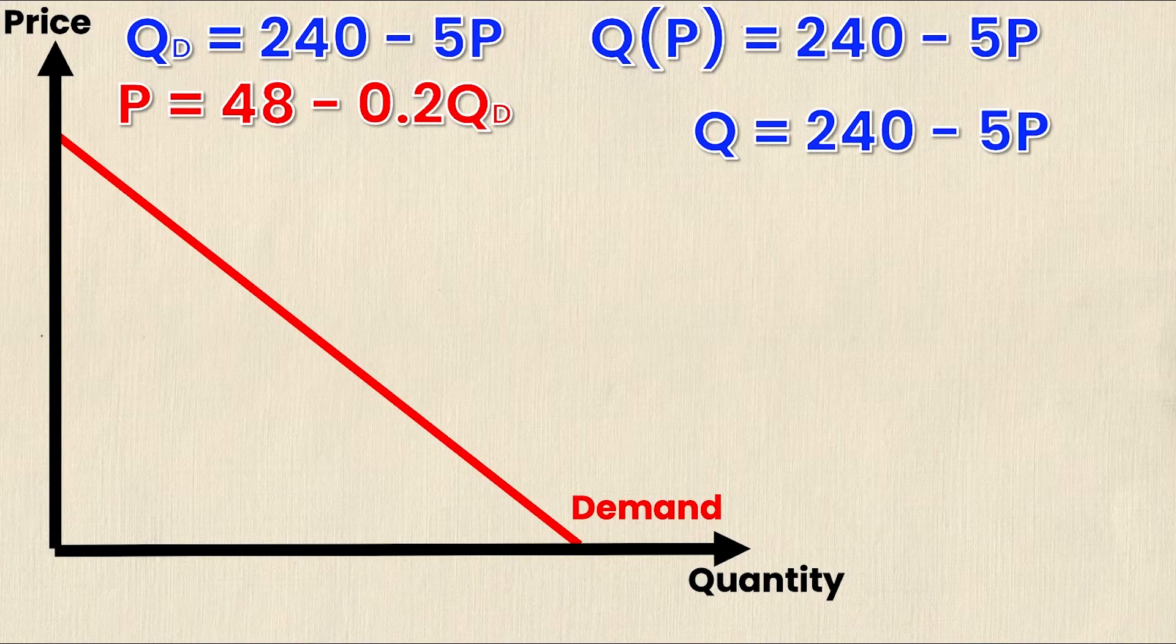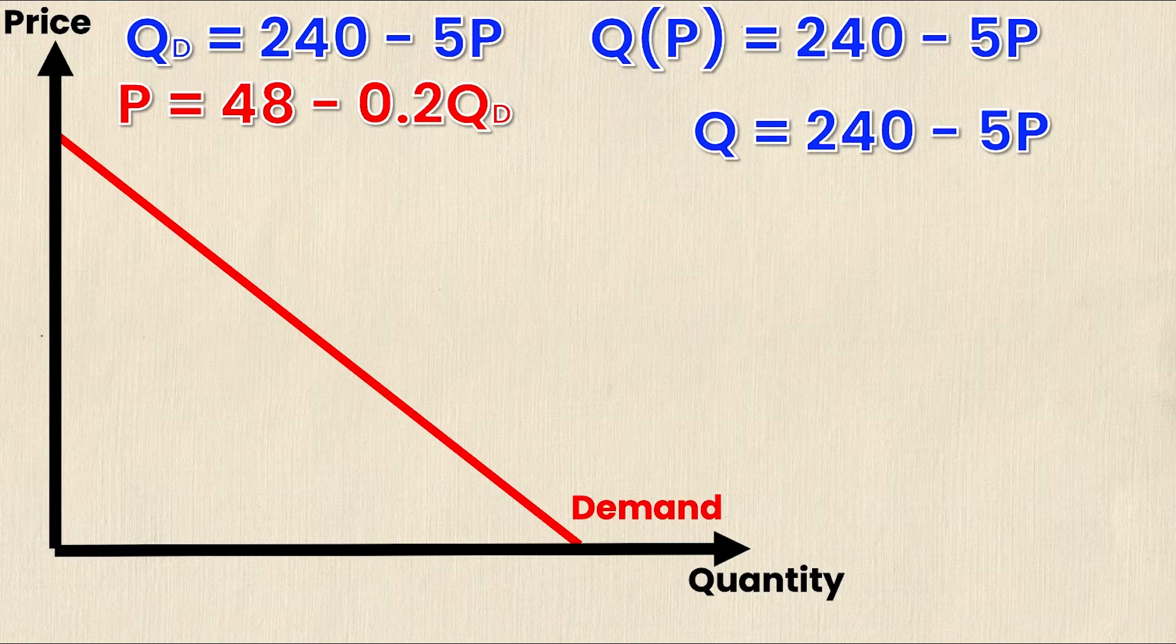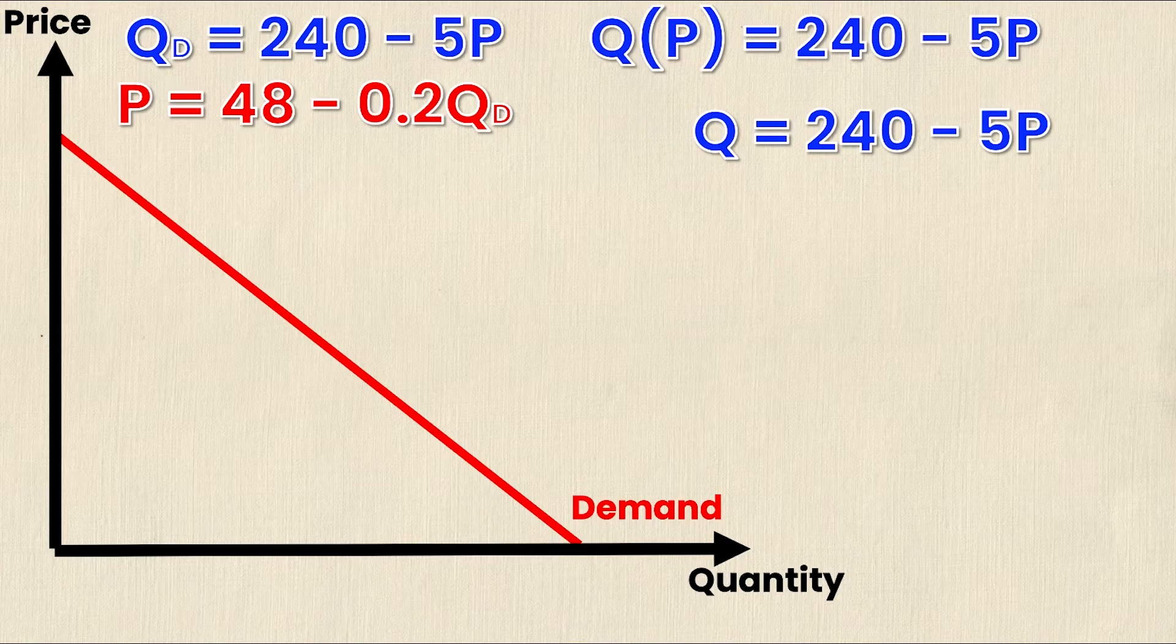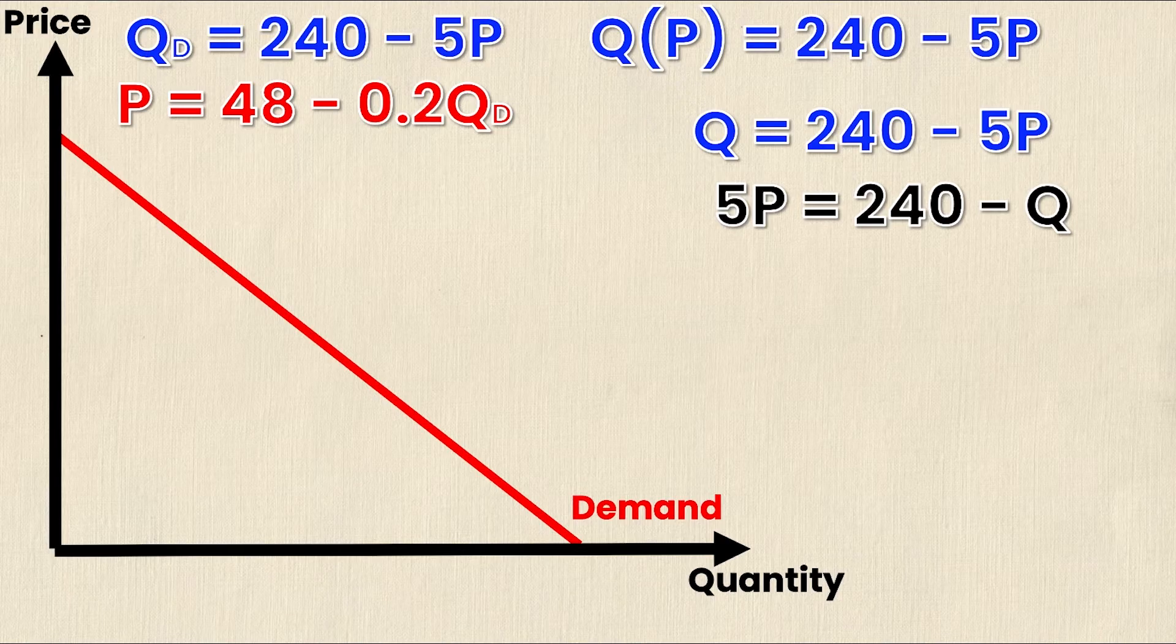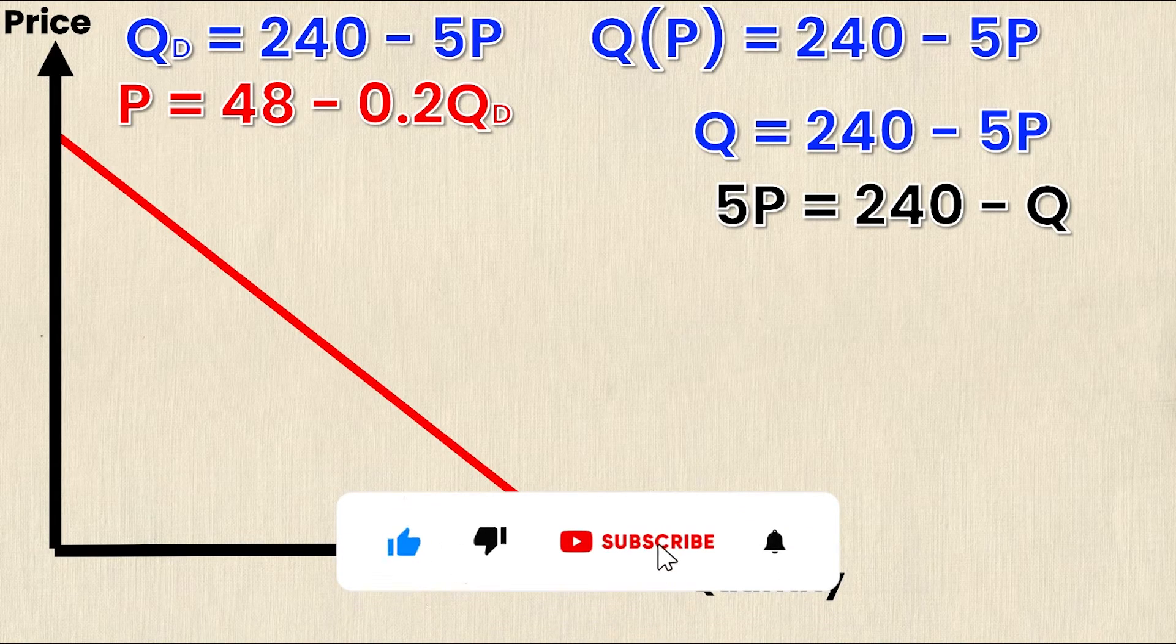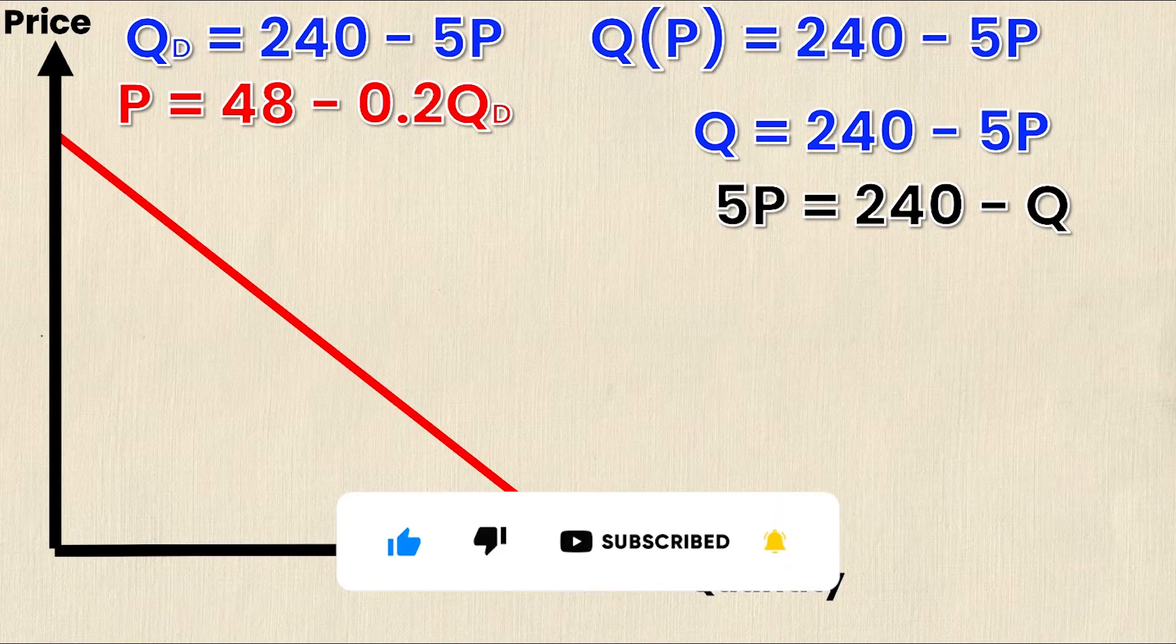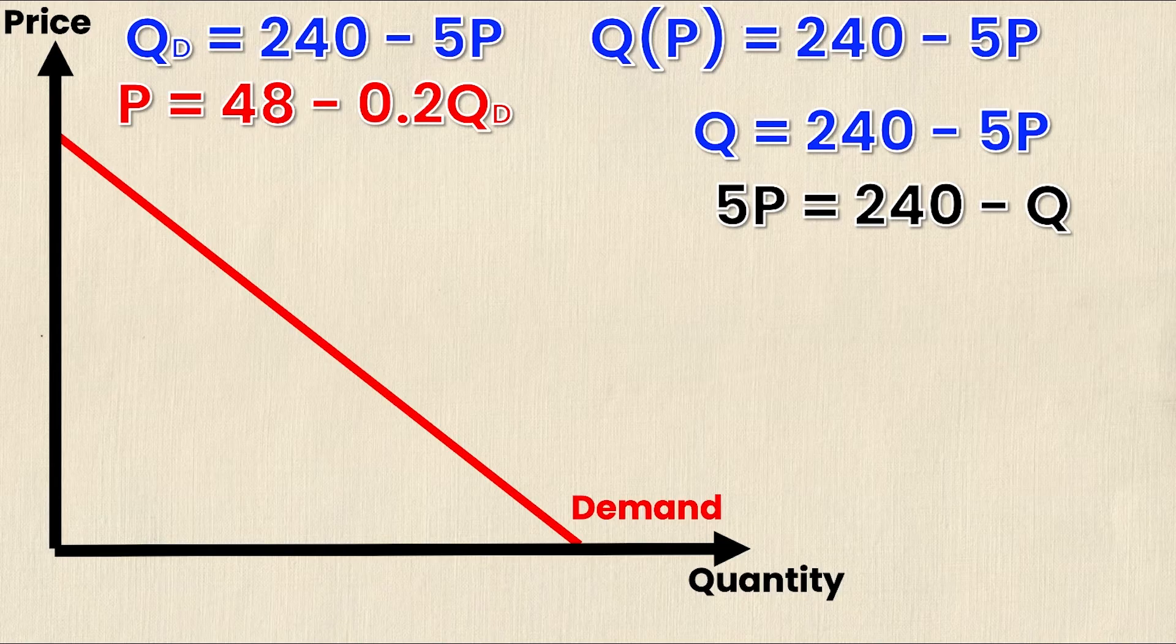Q equals 240 minus 5P. To get the inverse demand, I want to isolate for P instead of Q, so P becomes the dependent variable and Q becomes the independent variable. The first step is to switch the sides of the equal sign. The 5P goes to the left and Q goes to the right. Switching sides switches the sign of the coefficient, so now 5P is positive and Q is negative.